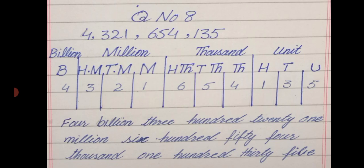We have units including ones, thousands, millions, and billions — I have placed every digit into its house. The number is 4,321,654,135.